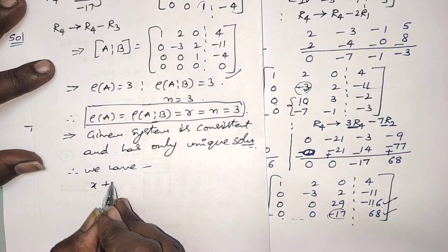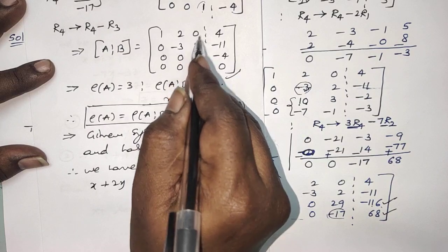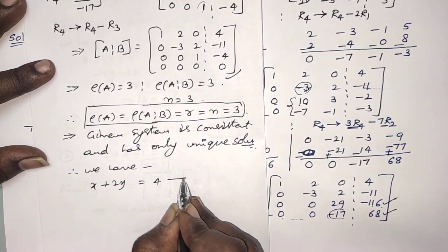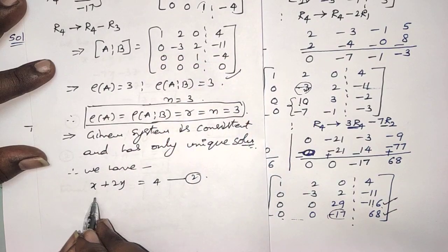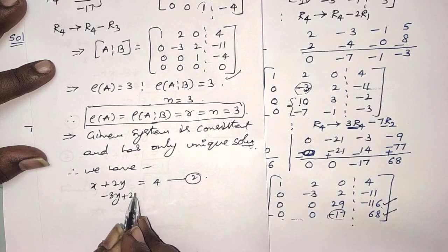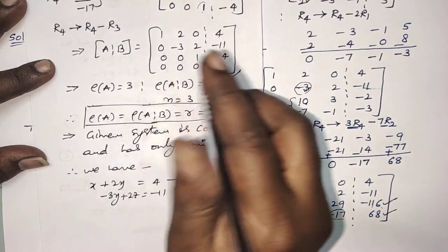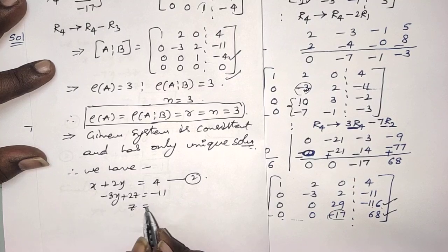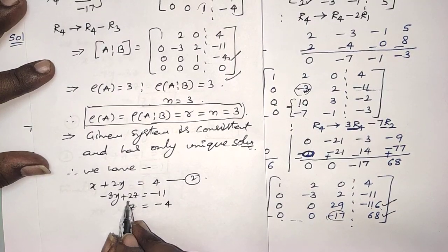The first equation is X + 2Y = 4 (Z coefficient is 0, so leave the Z term). The second equation is minus 3Y + 2Z = minus 11. And the third equation is Z = minus 4. So we directly get the Z value: Z = minus 4.